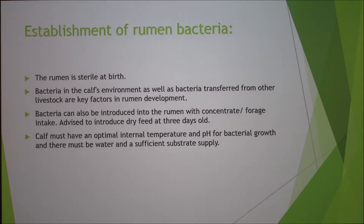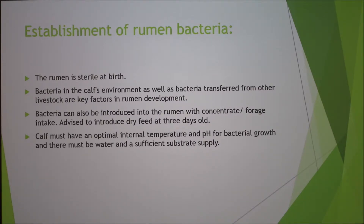The rumen is sterile at birth and bacteria need to be introduced. It can be transferred from other livestock as well as the environment in which the calf is housed. It can also be introduced from concentrate and forage intake, and dry feed should be available for the calf from three days of age. The calf must have an optimal internal temperature and pH for the bacteria to grow, and there must be water and a sufficient substrate supply for the bacteria.